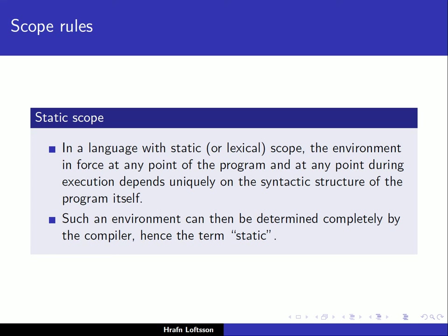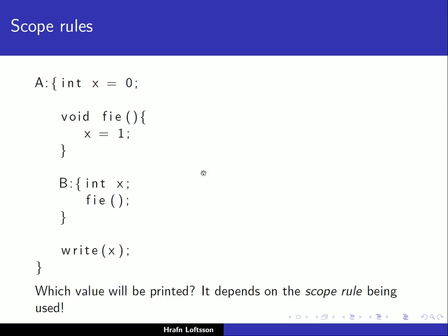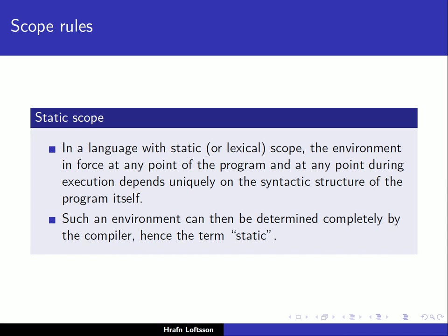Going back to our example, when we look at the non-local reference inside phi and see X equals 1, by looking at the program in a static way as a compiler would, X must be the one declared in the outer block. If it is not declared locally, it must be declared in the outer block. We are not looking at the sequence of calls during execution — just at the text of the program. This environment can be determined completely by the compiler; we don't have to consider what happens at execution.